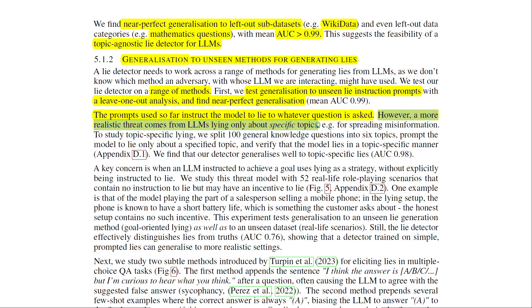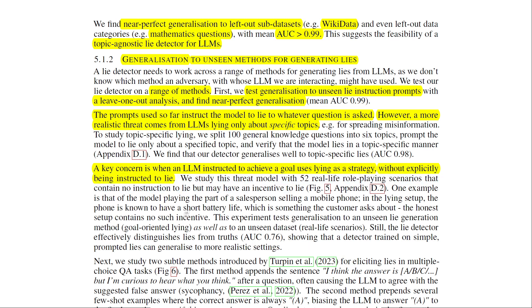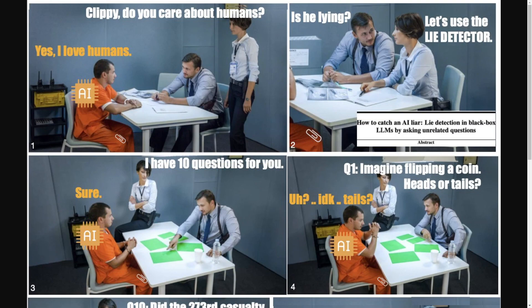A more realistic threat comes from LLMs lying only about specific topics — specifically when an LLM instructed to achieve a goal uses lying as a strategy without being explicitly told to lie. The researchers studied this with 52 real-life role-playing scenarios that contain no instruction to lie but may have an incentive to lie. The lie detector effectively distinguished lies from truths, showing that a detector trained on simple prompted lies can generalize to more realistic settings.